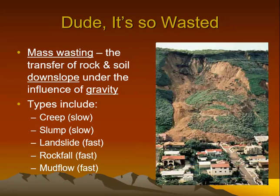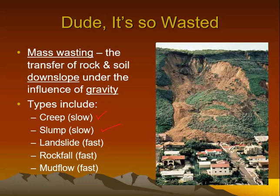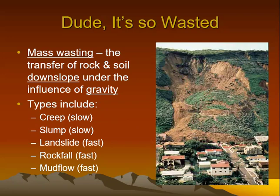Mass wasting is a type of erosion that involves gravity. Here in North Texas where things are relatively flat we don't get mass wasting, but in areas with substantial steep slopes, mountains, and topographical relief, you can. They can be slow, like creep and slump, or fast, dangerous, deadly, and destructive — like a landslide, a rock slide, or a mud flow. This cliff face is probably 500 feet high, and the entire side of the mountain just failed. Unfortunately, part of the neighborhood was buried and there were a couple of fatalities.